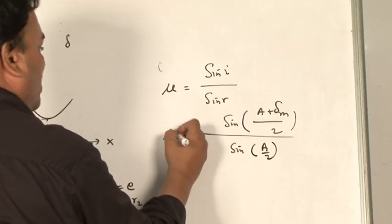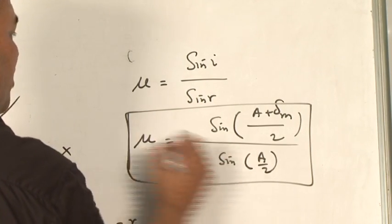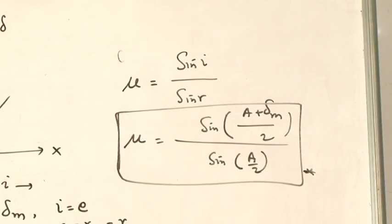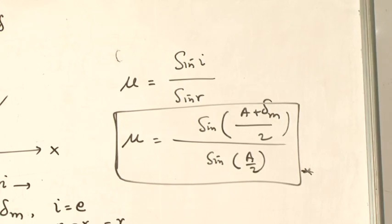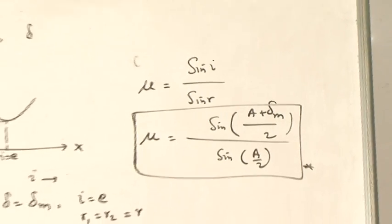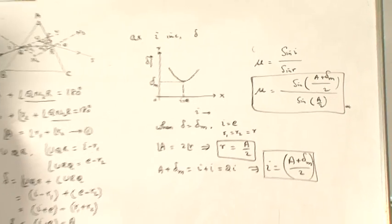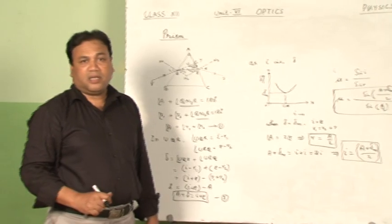This formula gives the refractive index of the material of the prism. This is a complete 5-mark derivation and must be studied thoroughly.